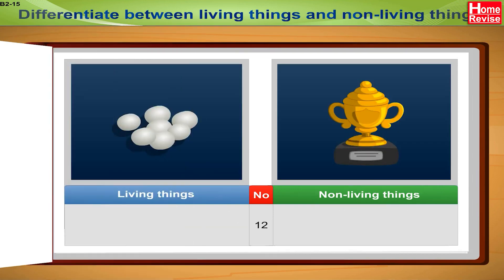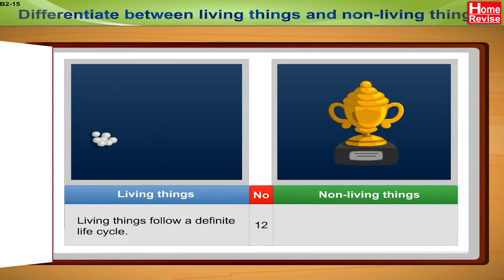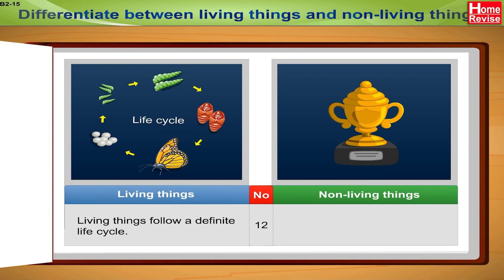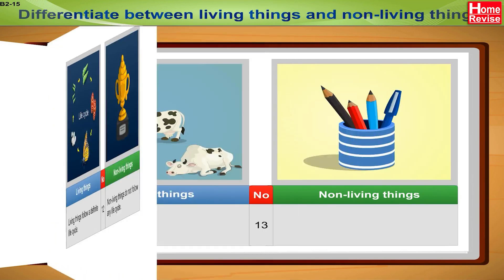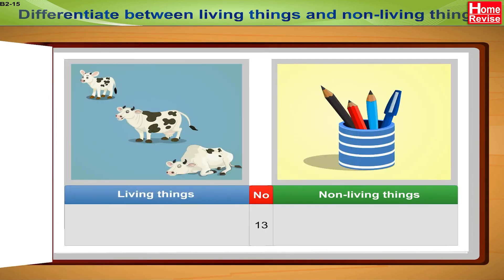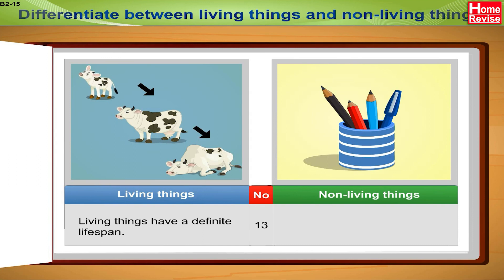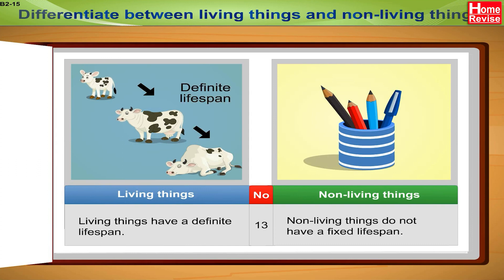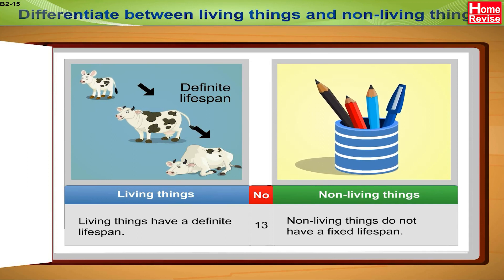12. Living things follow a definite life cycle, while non-living things do not follow any life cycle. Living things also have a definite life span, while non-living things do not have a fixed life span.